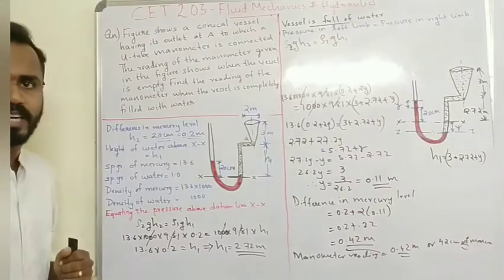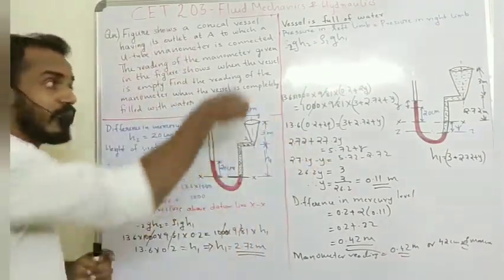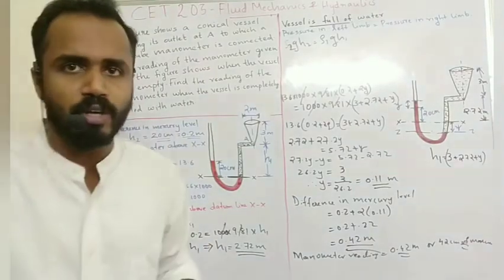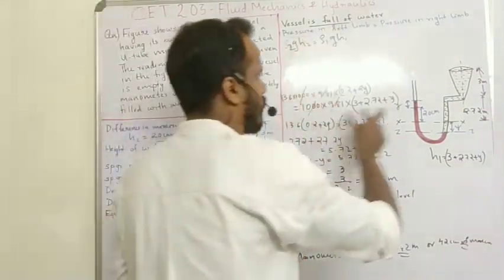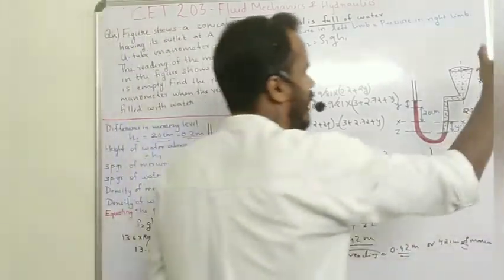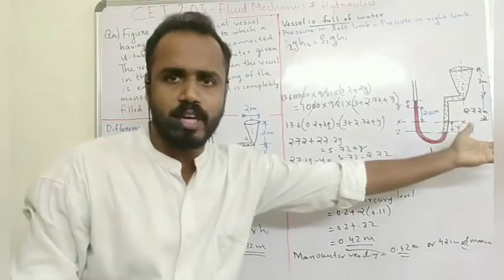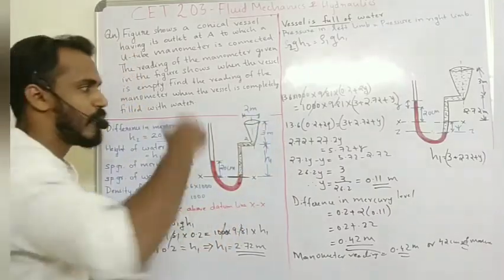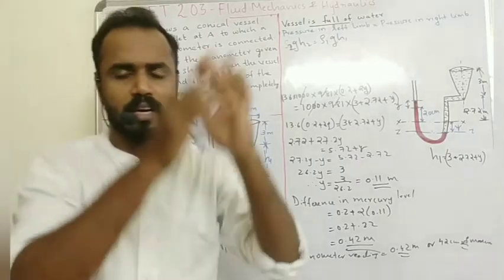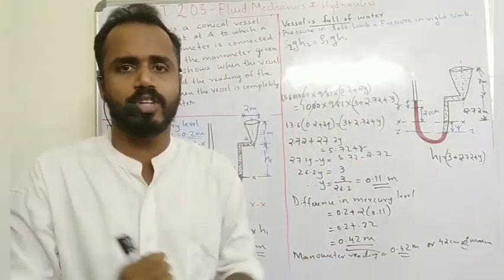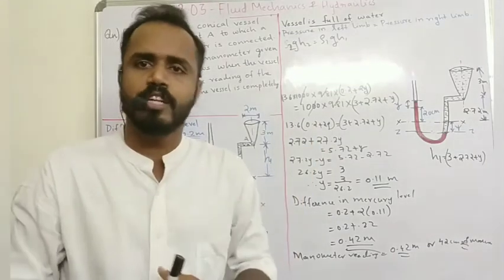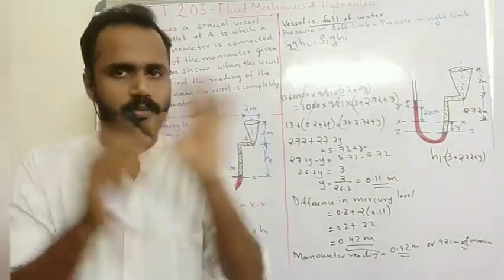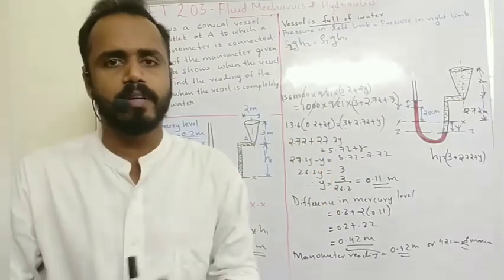To summarize this problem: when the vessel is completely empty the manometer reads 20 cm, and when the vessel is completely full of water we solved the same pressure balance relation to find the manometer reading. This problem is straightforward once you set up the pressure equations correctly.